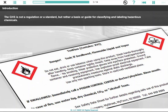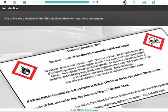The GHS is not a regulation or a standard, but rather a basis or guide for classifying and labeling hazardous chemicals. One of the key directives of the GHS involves labels for hazardous substances.